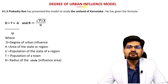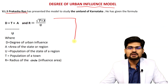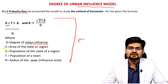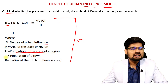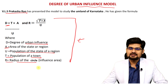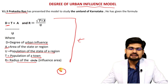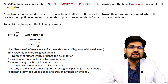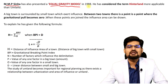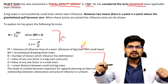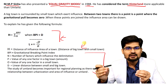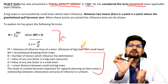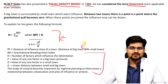VLS Prakash Rao's degree of urban influence model gives a formula to delimit the umland of Karnataka. The degree of urban influence D is calculated using the area and population of the state or region, where T is the population of the town and R is the radius of the circle representing the influence area. MMP Sena also used an equal gravity model in the Indian context in 1988. The whole point is to delimit the maximum extent to which city services extend — and that zone is called the sphere of urban influence, umland, or city region.